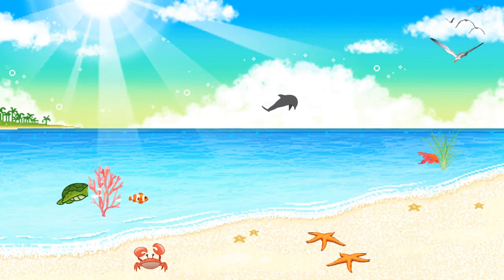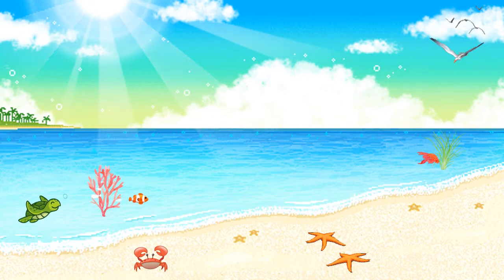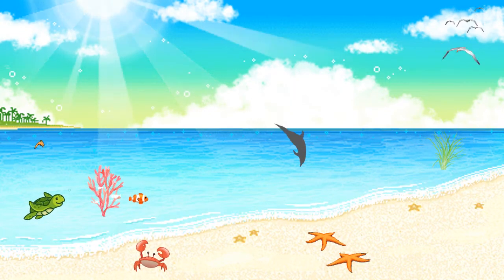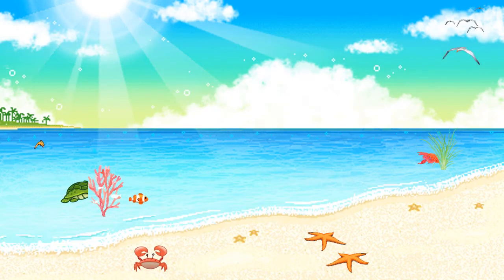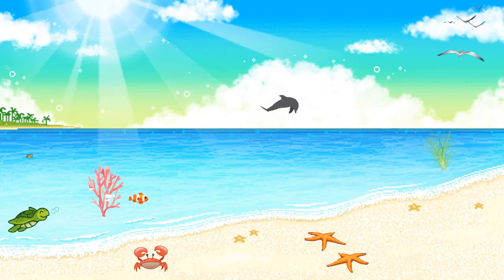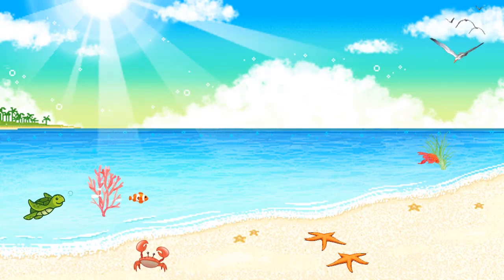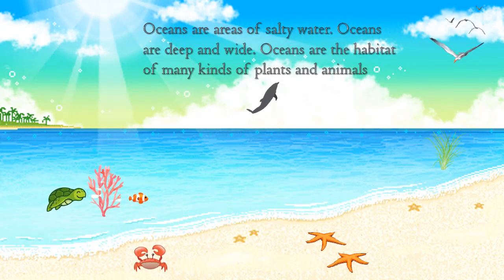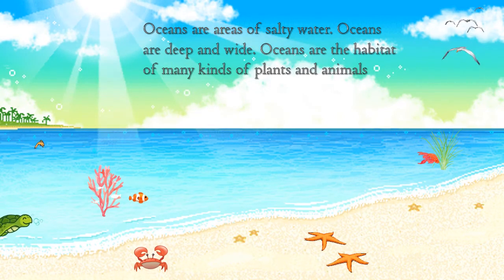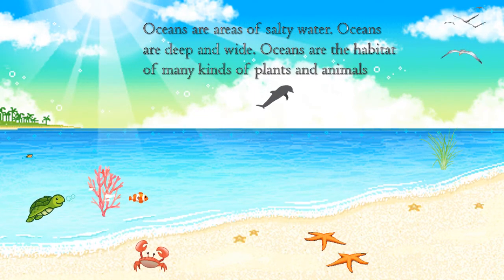We can see different kinds of animals and plants that live in the water. We can see a turtle, fish, crab, starfish, seaweed, and coral reef. These animals and plants live in the ocean. Oceans are areas of salty water. Oceans are deep and wide. Oceans are the habitat of many kinds of plants and animals.